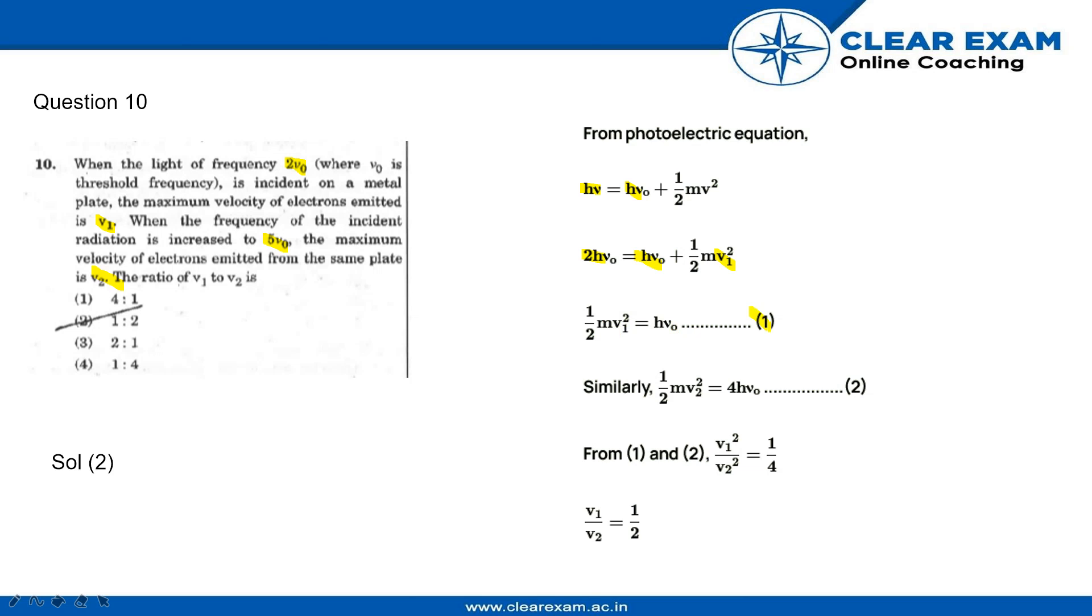= hν₀. Similarly, we get ½mv₂² = 4hν₀ because the incident light frequency is increased to 5ν₀. Now from equations 1 and 2, when we divide both of them we